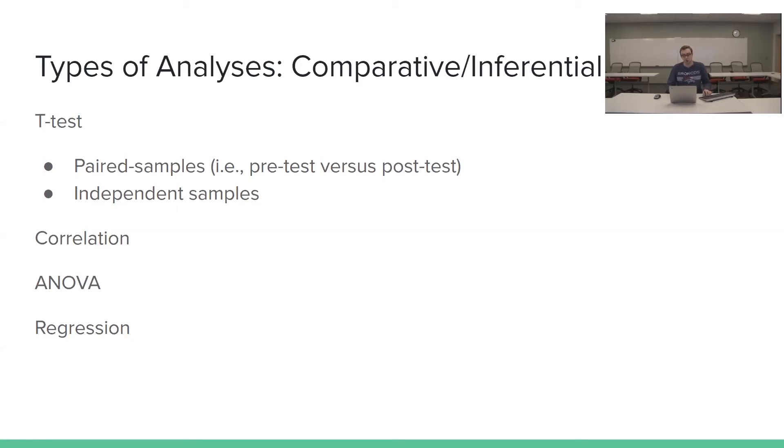Next up we have correlation. And this is a technique that can show whether and how strongly pairs of variables are related. For example, height and weight are related. Taller people tend to be heavier than shorter people. That's a correlation.